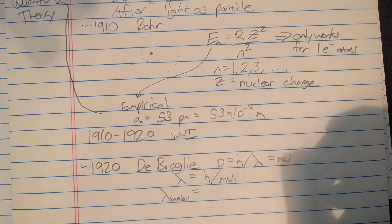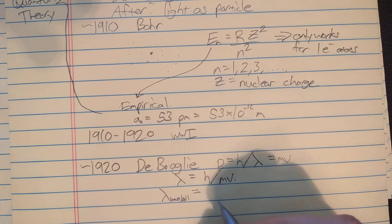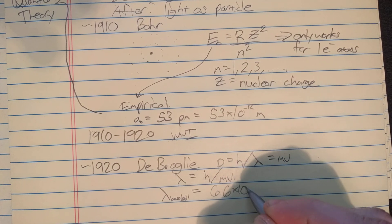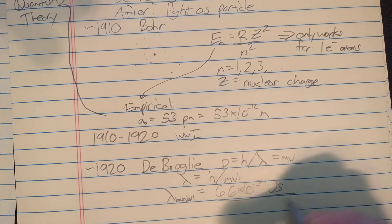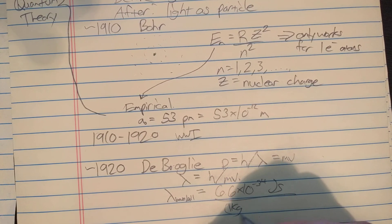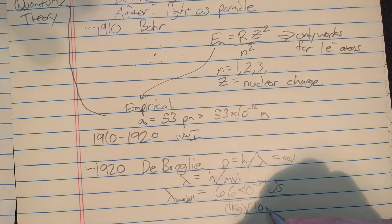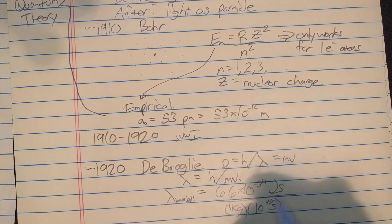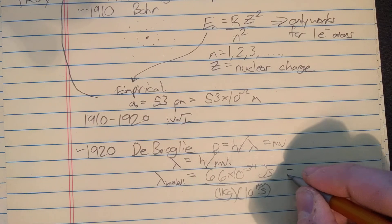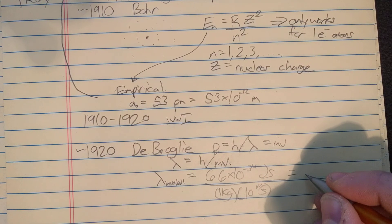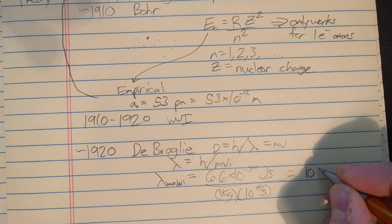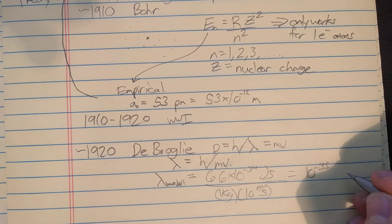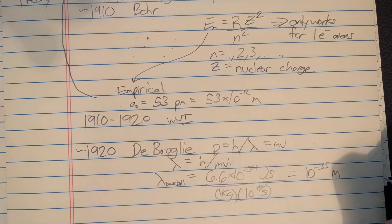Let's do the wavelength of a baseball. Let's say the baseball weighs one kilogram and it's moving 10 meters per second. Planck's constant was about 6.6 times 10 to the negative 34 joules per second. We're going to divide that. We say the baseball weighs one kilogram and it's moving about 10 meters a second. Let's ignore the 6.6 because we're just thinking order of magnitude here, and you're going to end up getting 10 to the negative 35 meters for the wavelength.